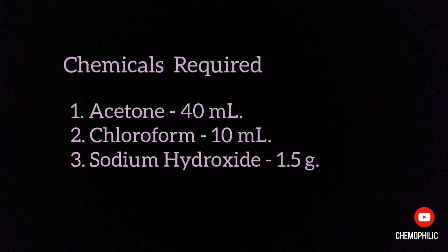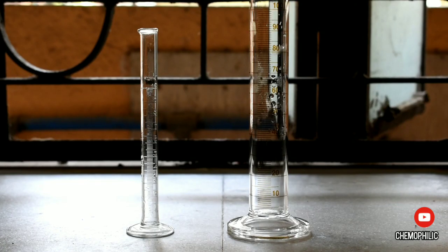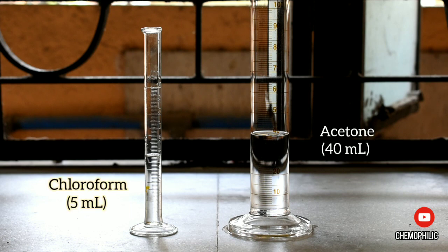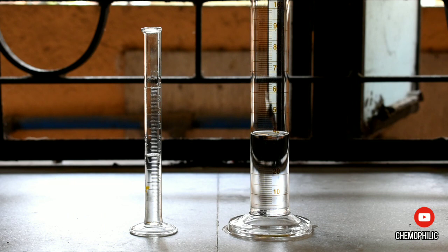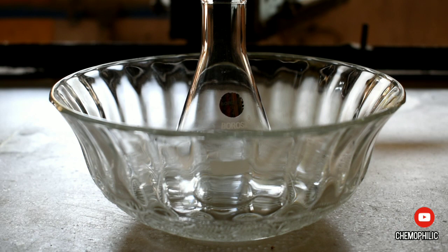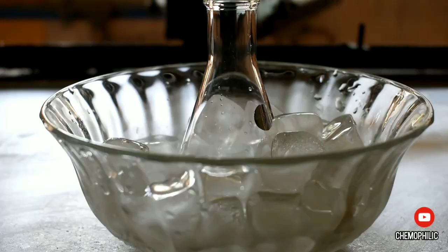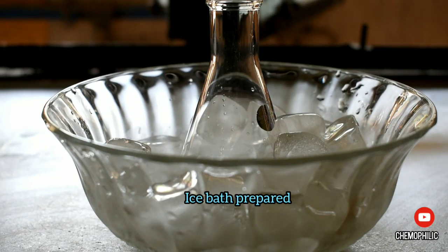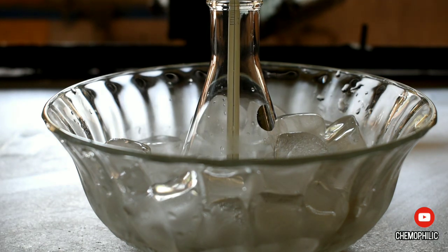I require three chemicals: acetone, chloroform, and crushed sodium hydroxide. I took two measuring cylinders—a 100 ml measuring cylinder to take the acetone and a 10 ml smaller measuring cylinder to take the chloroform. I took the chemicals and now it's time for the setup. A conical flask of 100 ml is kept in a trough. Now I prepared an ice bath and inserted a thermometer to record the temperature.